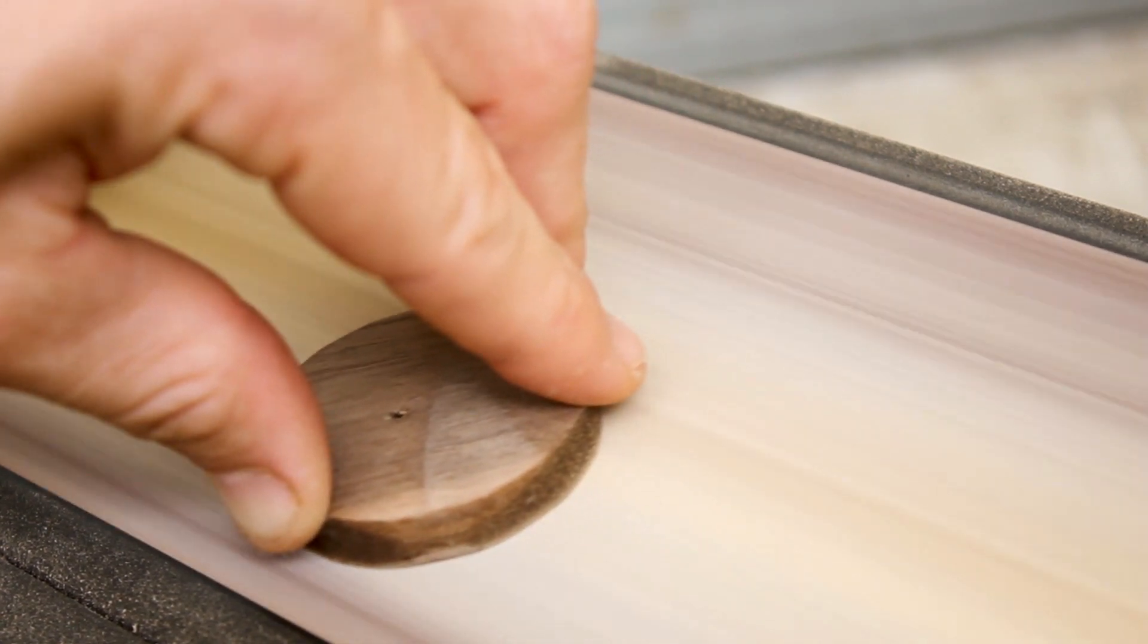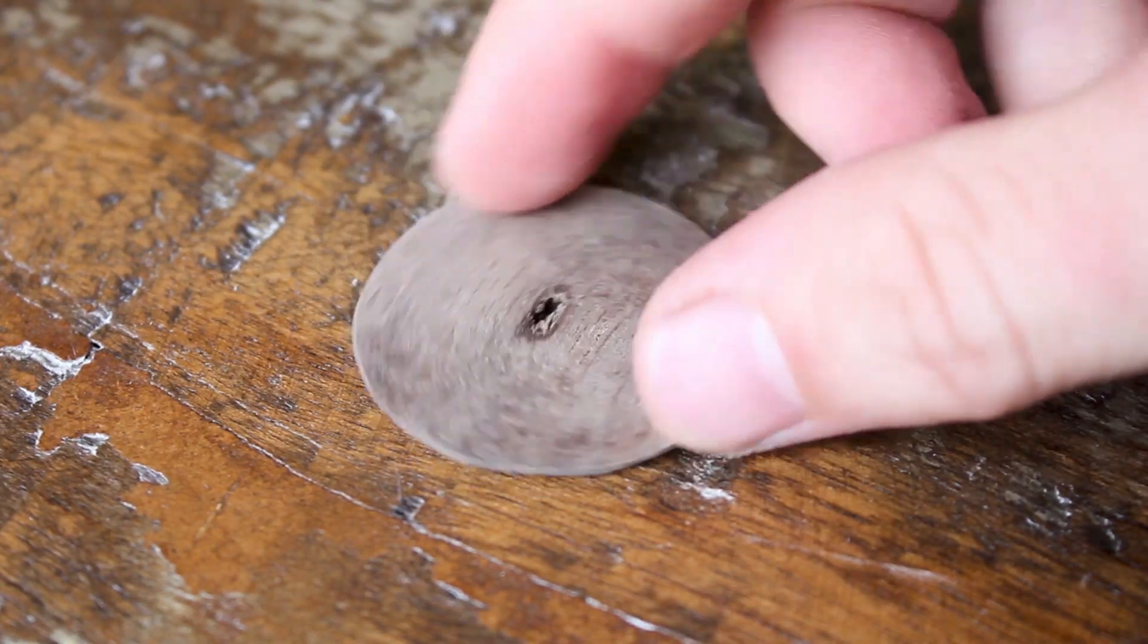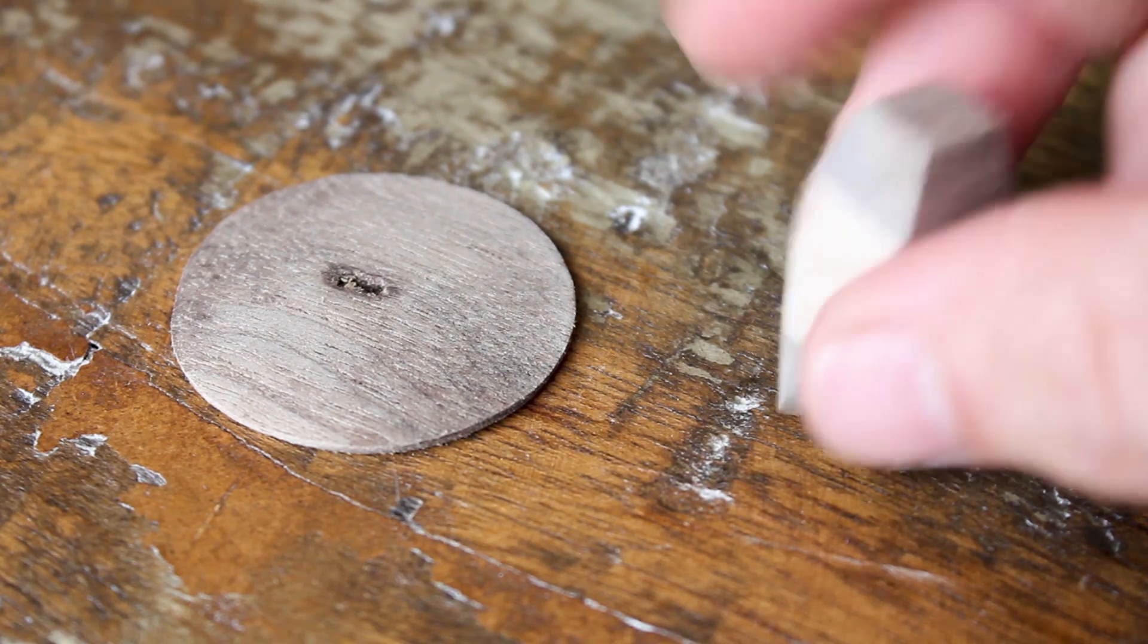That was followed by flattening on the belt sander to help lower the profile. Then after that I glued these two pieces together.